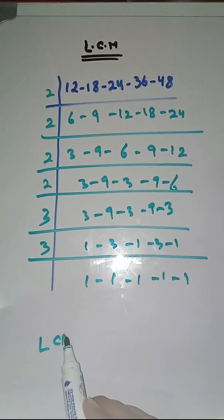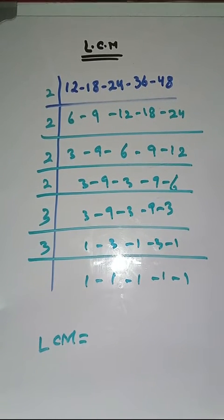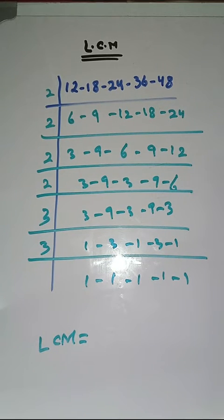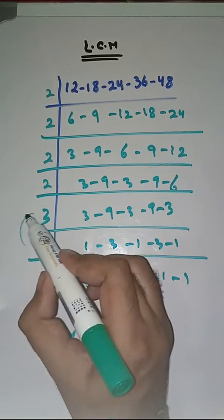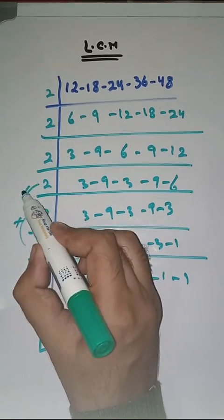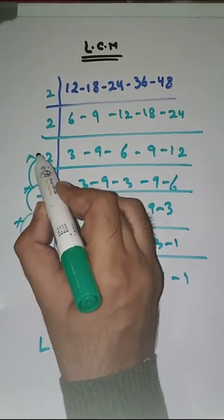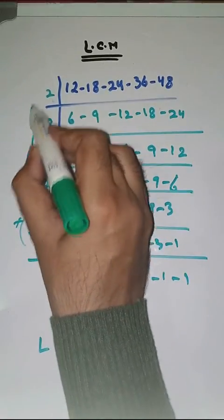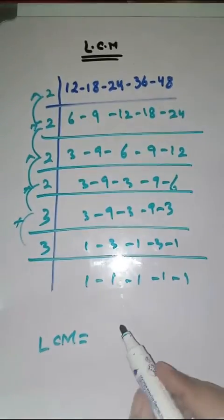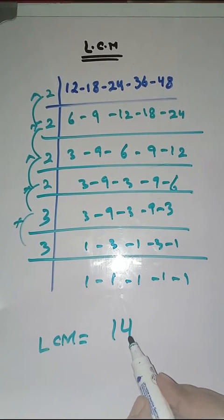So, LCM of 12, 18, 24, 36 and 48 is equal to the product of prime factors, which is 3 × 3 × 2 × 2 × 2 × 2, which is equal to 144.